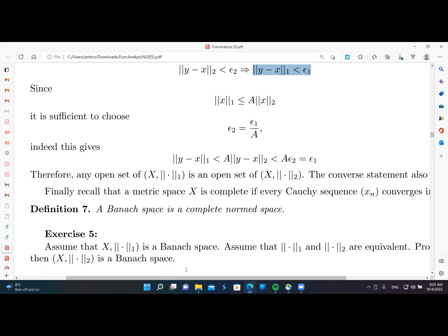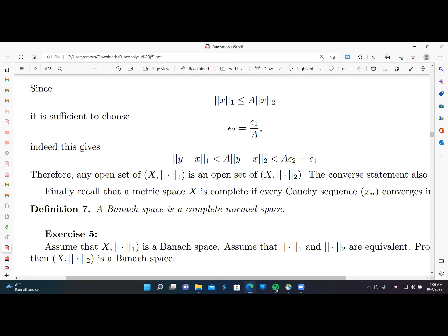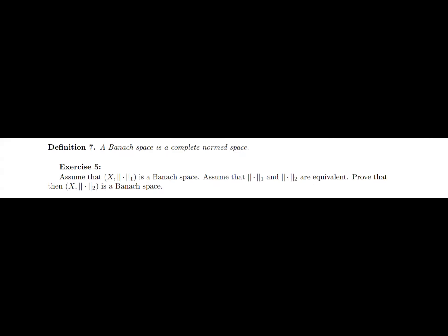Next exercise: assume that X with norm one is a Banach space, and assume that norm one and norm two are equivalent. Then prove that X with norm two is also a Banach space. We consider a Cauchy sequence in X endowed with norm two, and we want to prove this sequence converges in X endowed with norm two.